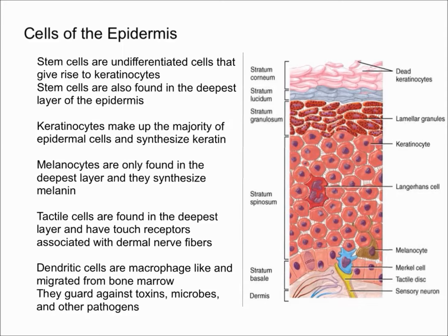Now let's talk about the different cells of the epidermis. The five cells we're going to discuss are stem cells, keratinocytes, melanocytes, tactile cells, and dendritic cells. Stem cells are undifferentiated cells that give rise to keratinocytes, and they are found in the deepest layer of the epidermis, which is the stratum basale, as you can see on the right.